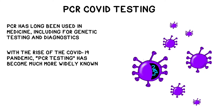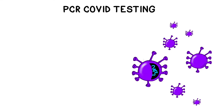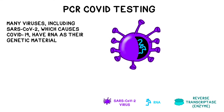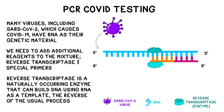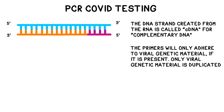PCR has long been used in diagnostics, but with the rise of the COVID-19 global pandemic, PCR testing has become far more widely known. PCR testing for the virus uses a modified version of PCR called RT-qPCR, also known as reverse transcription quantitative PCR. Many viruses, including SARS-CoV-2, the virus that causes COVID-19, use single-stranded RNA rather than DNA as their genetic material. To do PCR on it, we need to add additional reagents. Reverse transcriptase is a naturally occurring enzyme that can be used to manufacture DNA by using RNA as the template — the reverse of the usual DNA-to-RNA process. We call this copy cDNA, short for complementary DNA. The primers are made specifically to only adhere to the viral RNA.